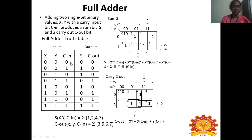The eight combinations are: 0+0+0 → sum=0, carry=0; 0+0+1 → sum=1, carry=0; 0+1+0 → sum=1, carry=0; 0+1+1 → sum=0, carry=1; 1+0+0 → sum=1, carry=0; 1+0+1 → sum=0, carry=1; 1+1+0 → sum=0, carry=1; 1+1+1 → sum=1, carry=1.